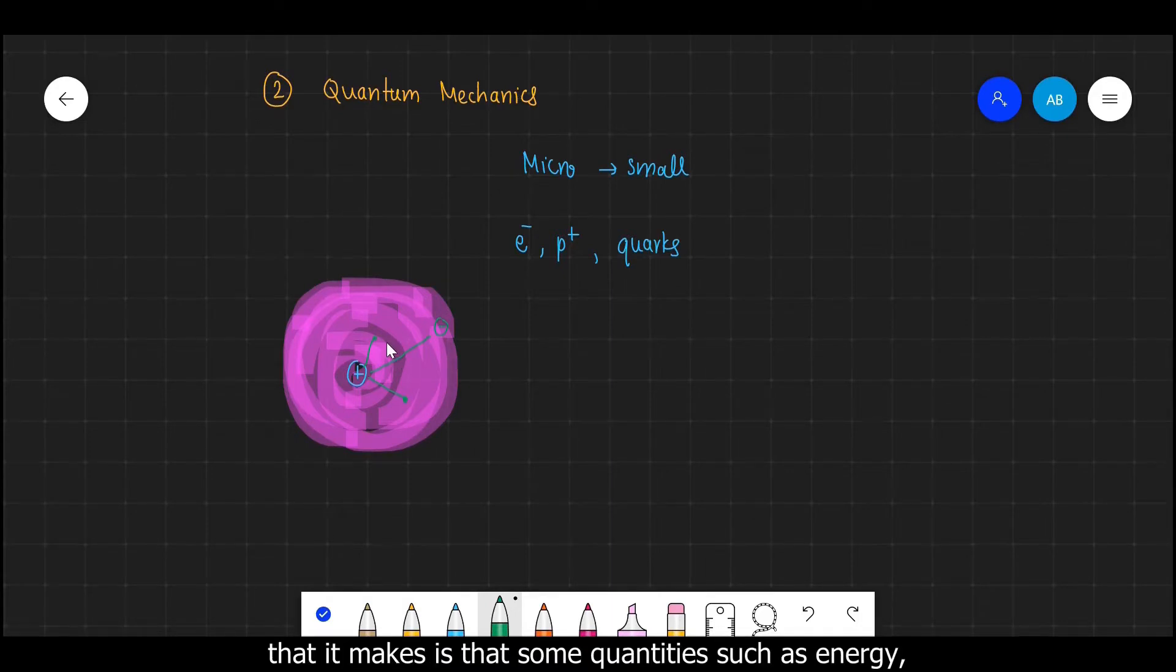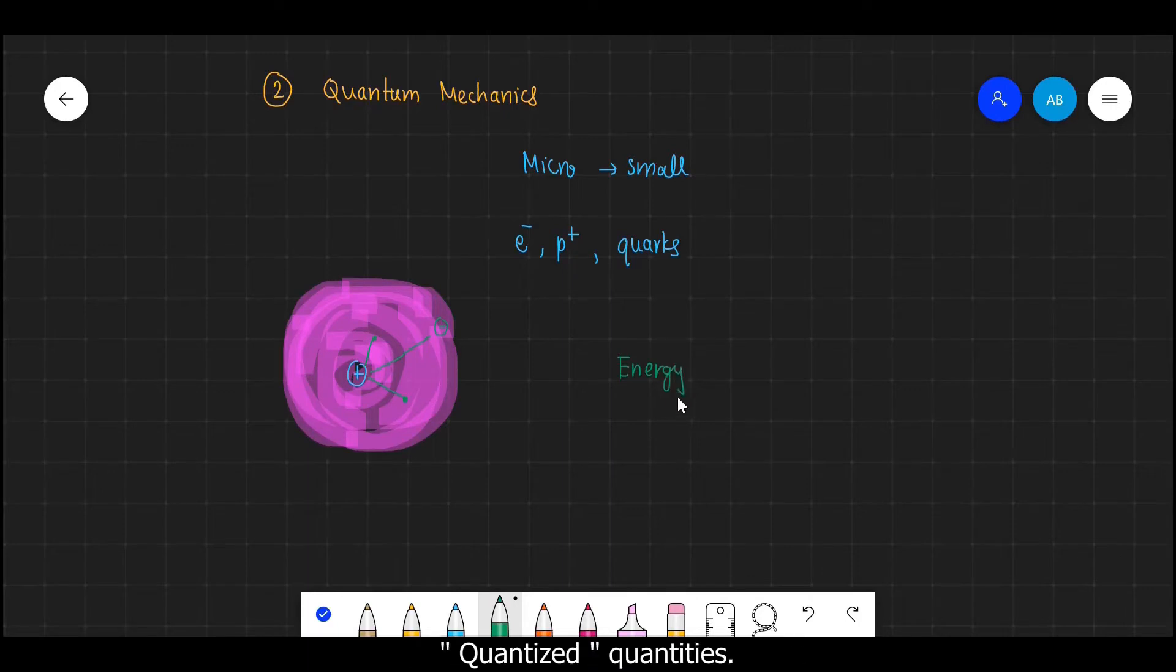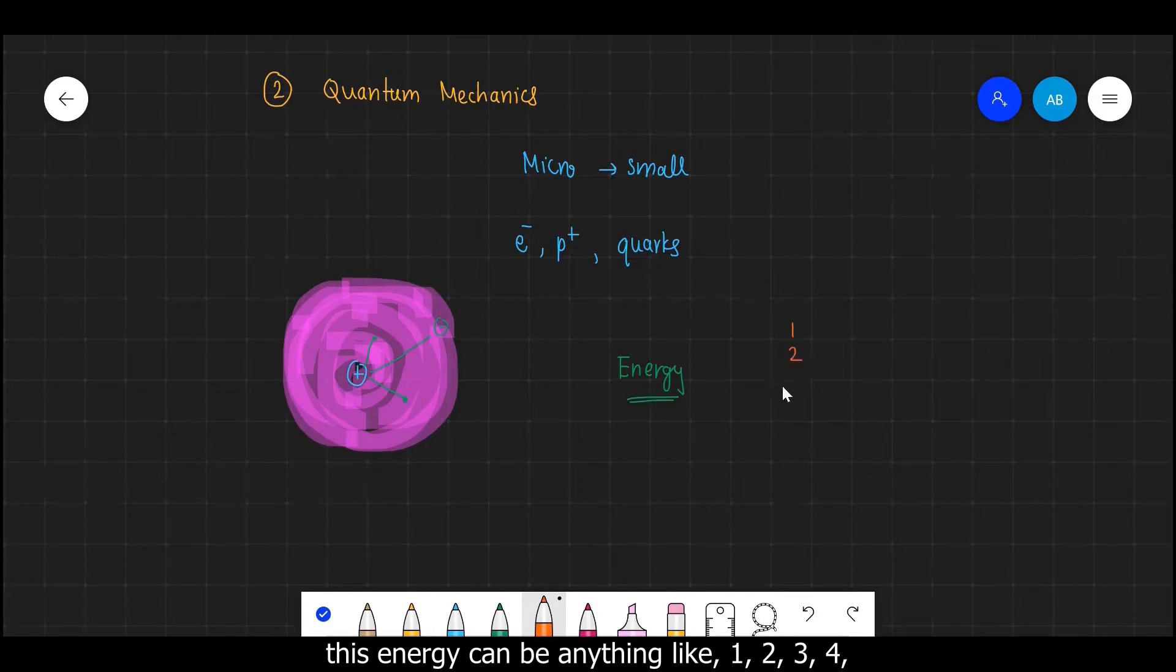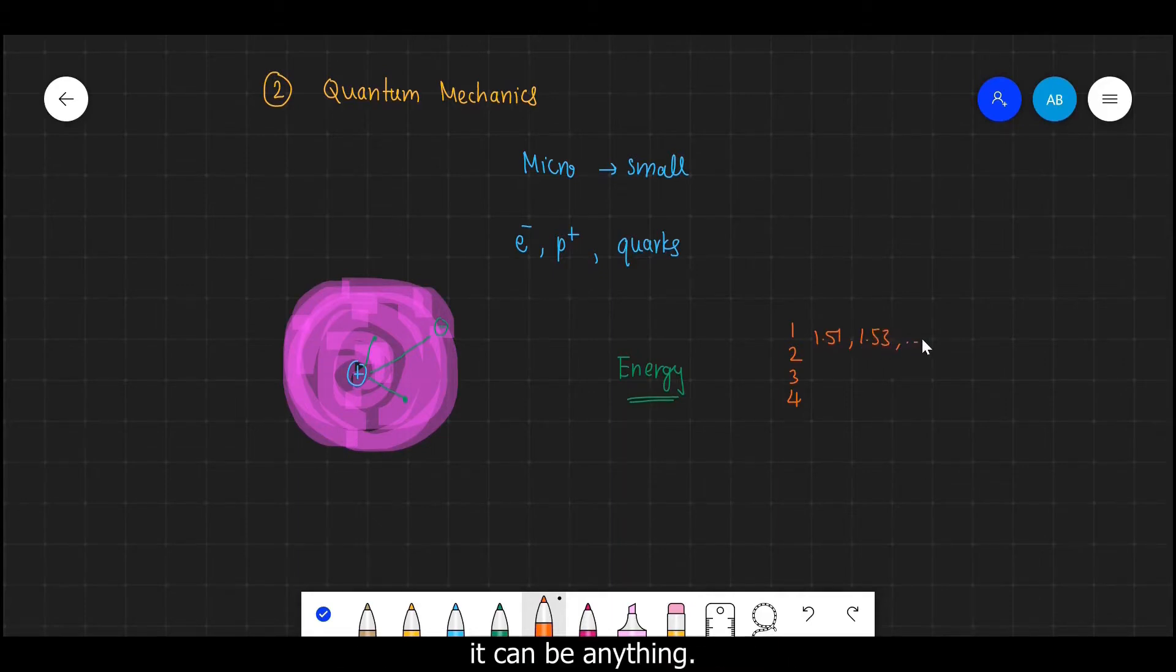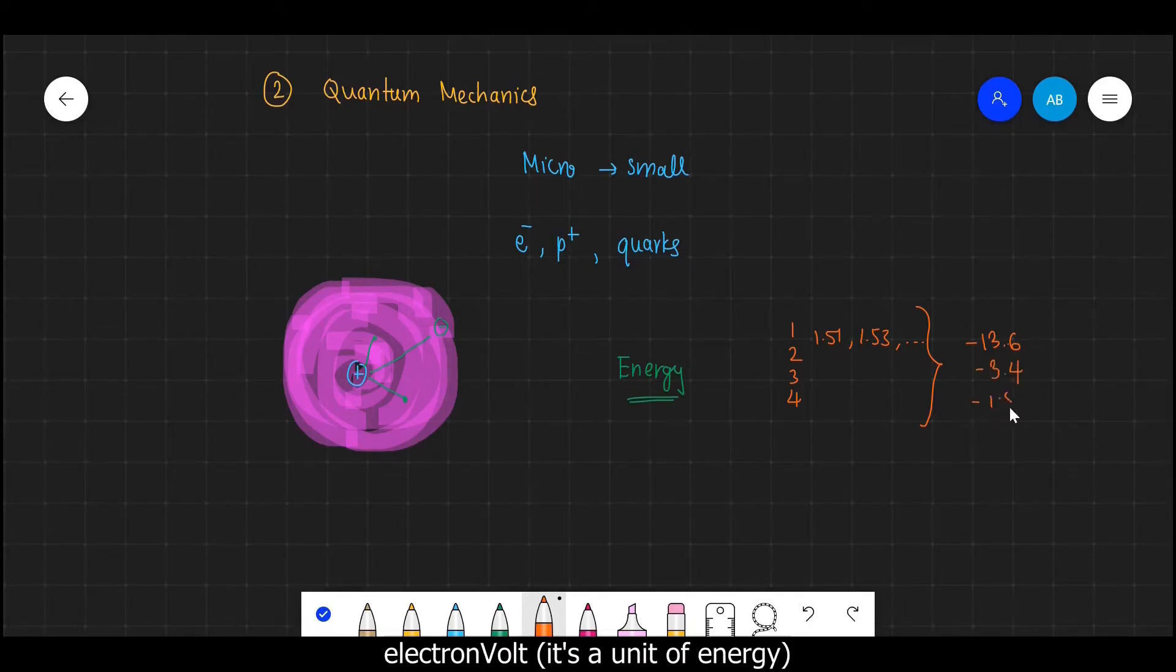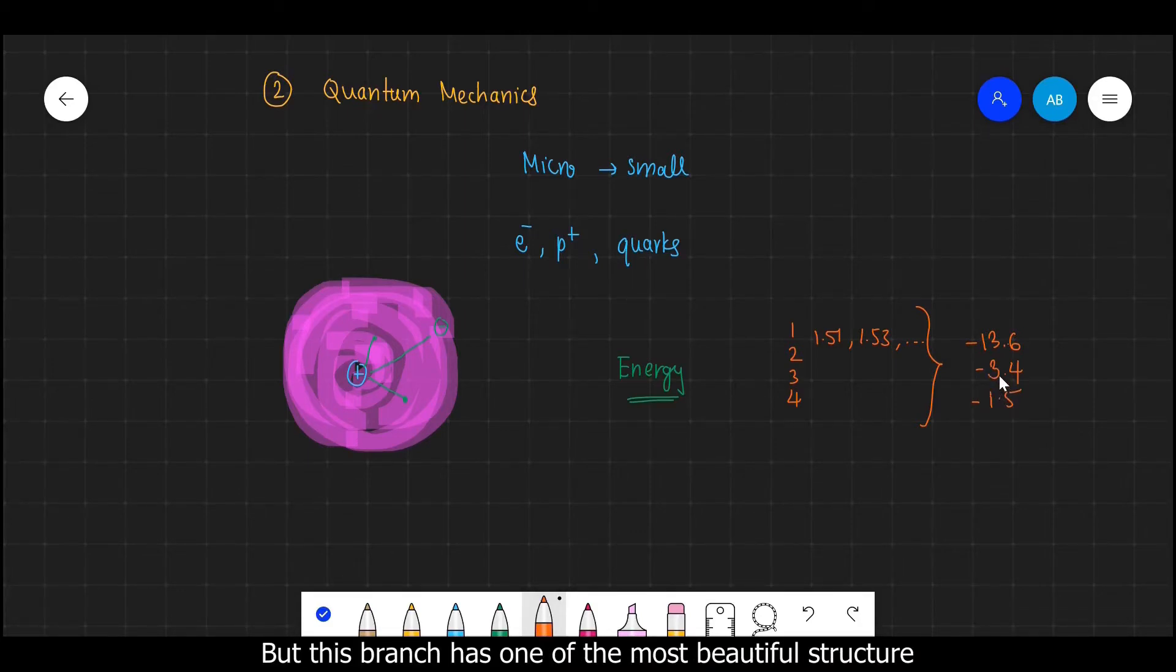And an amazing prediction that it makes is that some quantities such as energy, momentum, quantum mechanics says that these are quantized quantities. So if we are doing an experiment to find the energy of this electron, then we will think that this energy can be anything like 1, 2, 3, 4, or even the in-between numbers such as 1.51, 1.53. It can be anything. But no, quantum mechanics puts restrictions on these values of energies. We find that the energy of this electron can only take values such as minus 13.6, then minus 3.4, minus 1.5 electron volts.